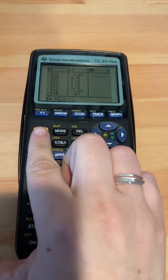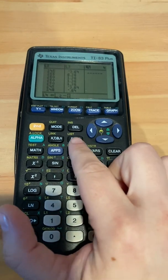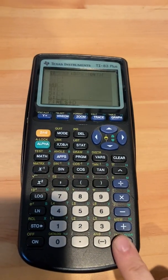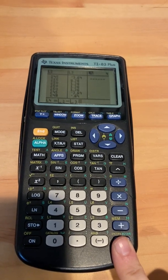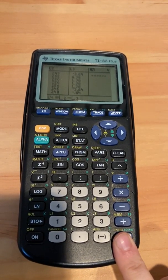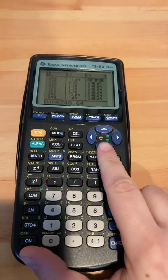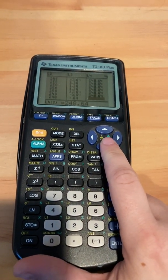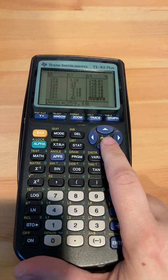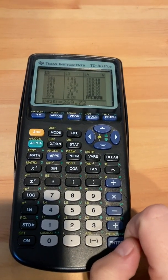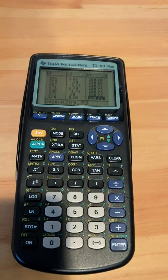And then we're going to pull list three by going second list, list three. Now we have list two minus list three. We press enter, and now we have the list of predicted amounts. All right, and that's how you do it.